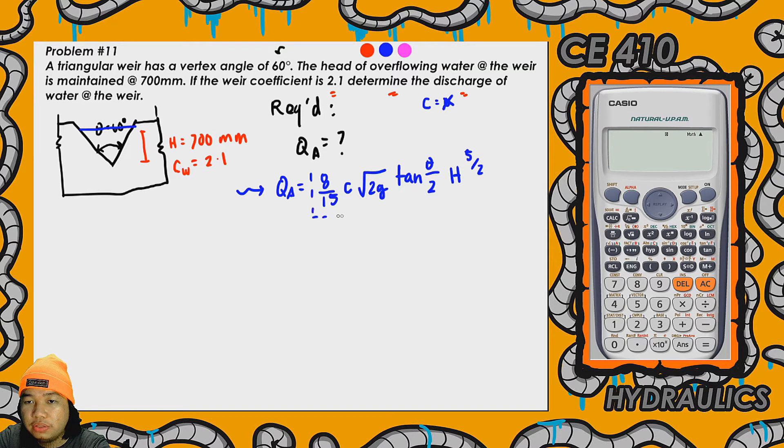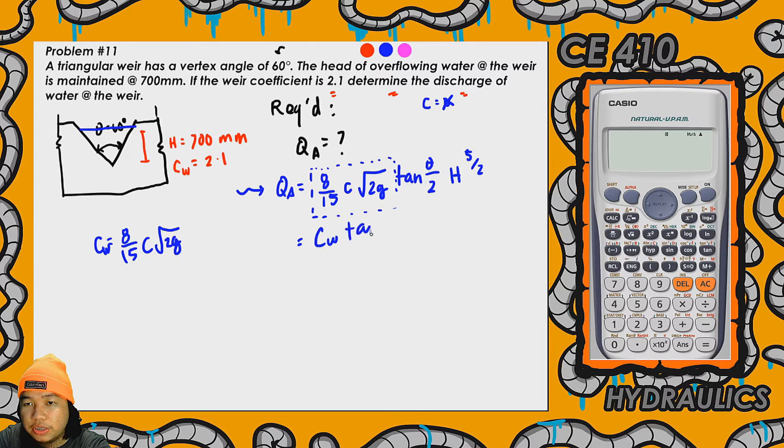Pero tandaan natin na itong function na to, 8 over 15 times C times the square root of 2g, is also equivalent to the coefficient of the weir or the weir coefficient. So that's 8 over 15 C times square root of 2g. So replace natin to as C sub w tangent theta over 2 times h raised to 5 halves.